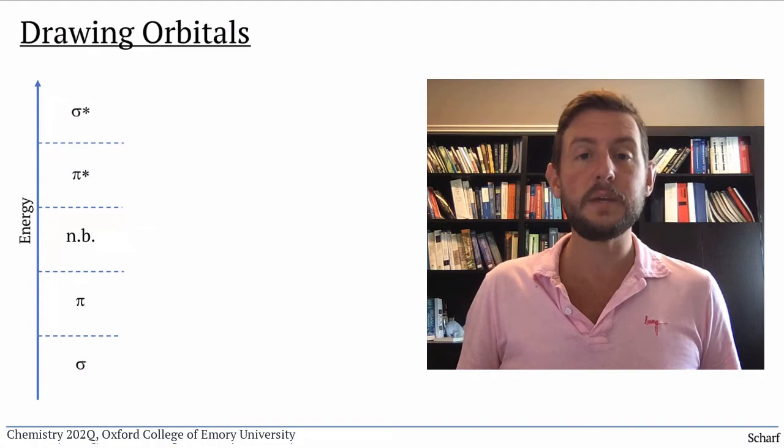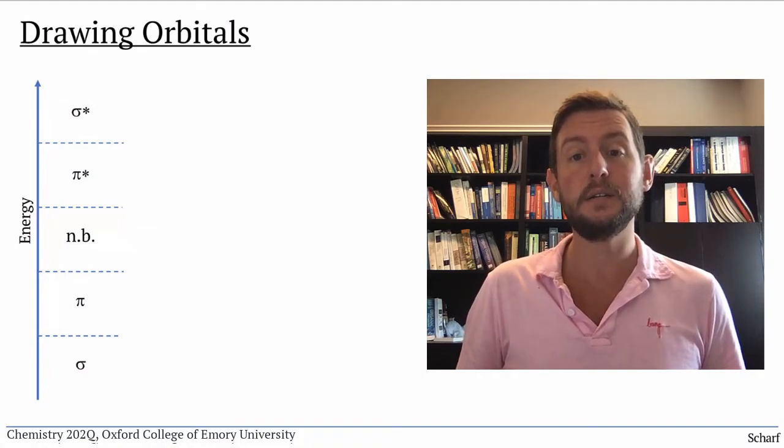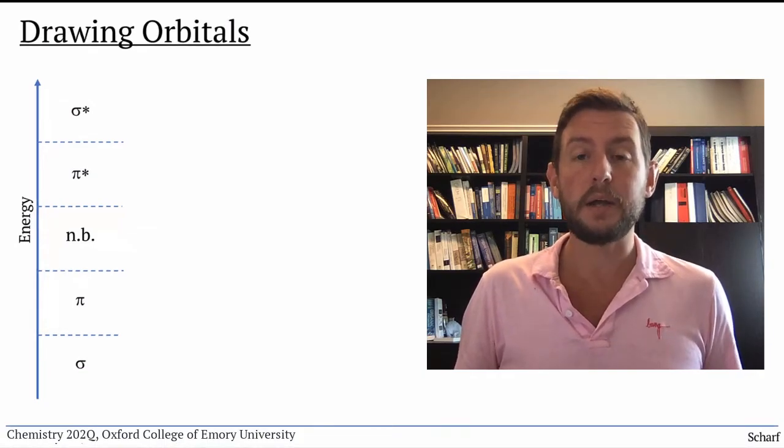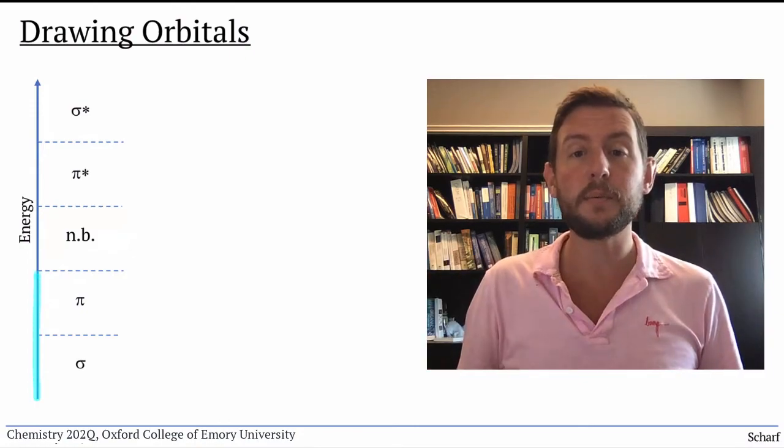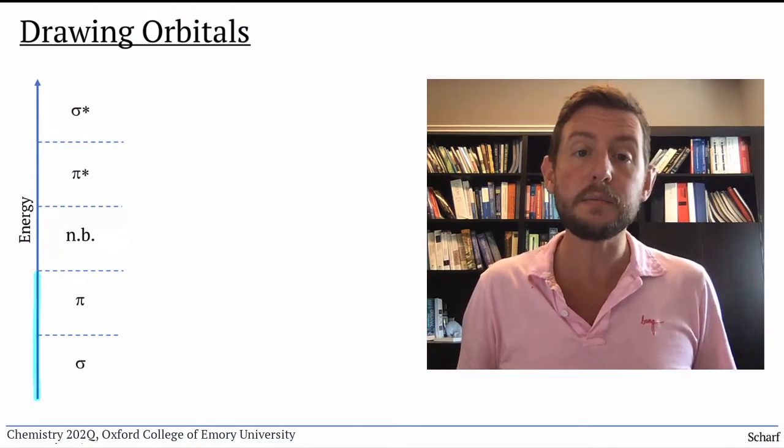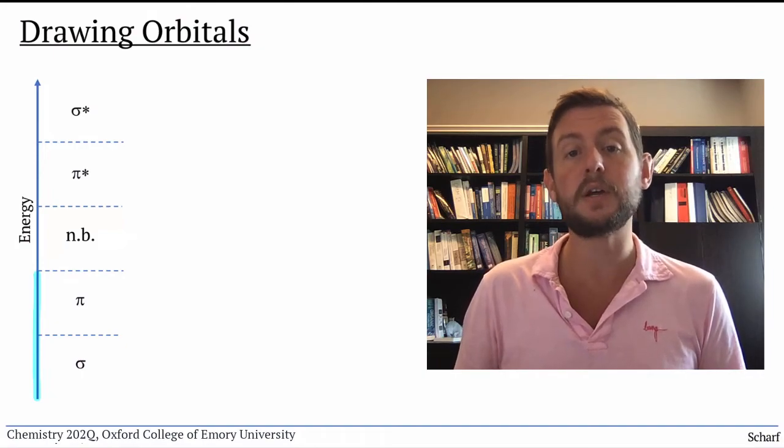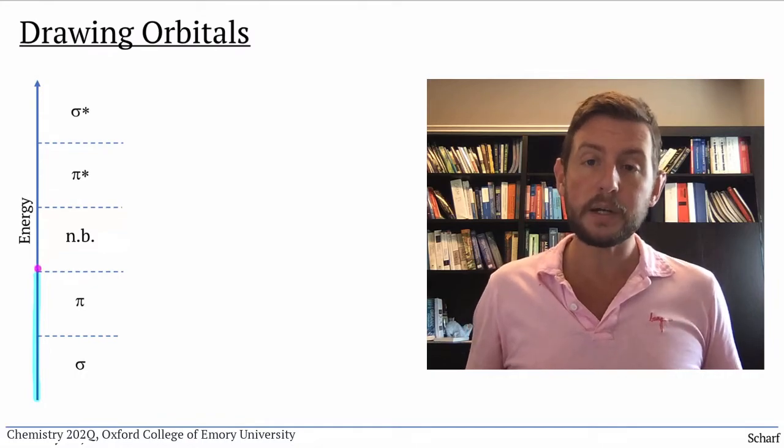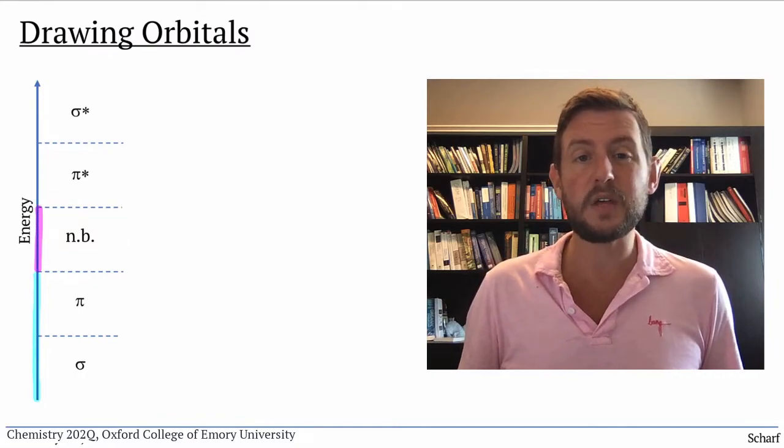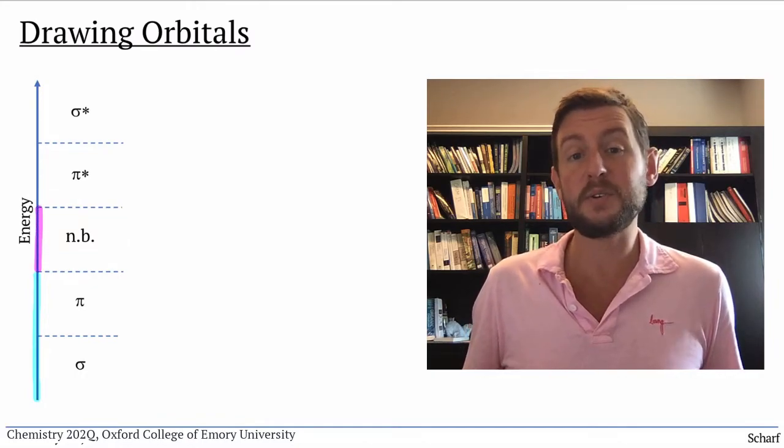As you know, orbitals can be either bonding, non-bonding, or anti-bonding. Bonding molecular orbitals come from the in-phase overlap of atomic orbitals. Electrons that live in bonding orbitals spend most of their time in between the bonded nuclei.